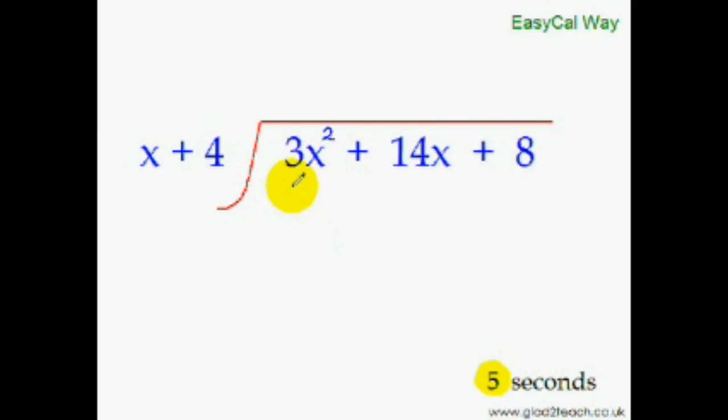Okay so now let me do it for you. 3x squared divided by x will give us 3x. Put minus 4 here. Minus 4 times 3x is minus 12x, plus 14x will give us plus 2x, so we will put plus 2. We are done, this is our quotient.